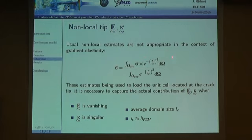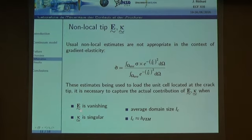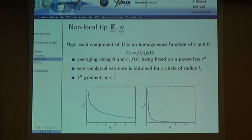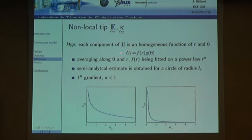Usual non-local strain estimates exist in the literature, but for gradient elasticity we expect the strain to vanish at the crack tip while the gradient of strain is singular. We therefore need to robustly estimate both quantities and carefully balance them. Our approach assumes the displacement is a homogeneous function of the distance and angle to the crack tip, and by averaging over r and theta we obtain a semi-analytical estimate of the displacement field, which we then average over a circle of radius equal to the unit cell length.